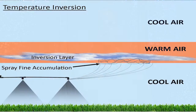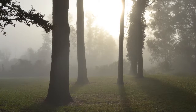Very calm conditions are also not good to spray under — they also increase the risk of drift. Very calm conditions occur during a temperature inversion. During most of the day, for example in the middle of the afternoon, the warmest air is at the Earth's surface, and as we move up in elevation, the temperature gets colder. Warm air rises, so during this period we have warm air rising from the Earth's surface up into the upper atmosphere and being replaced with cold air from above.